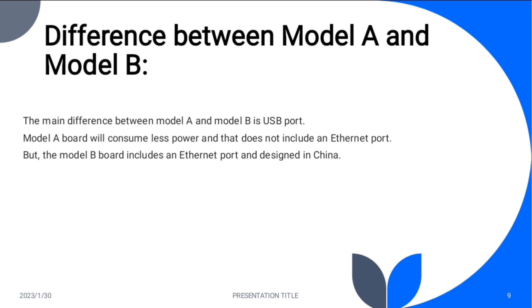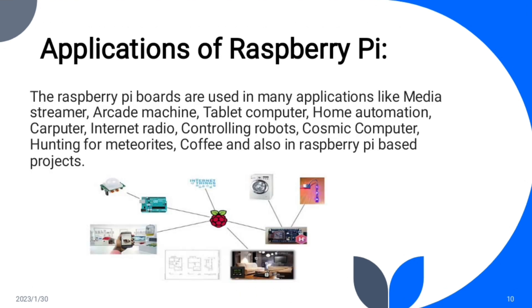Model A has a lower price and uses less power, whereas Model B has a higher price and uses more power. The Raspberry Pi boards are used in many applications such as media streamer, arcade machine, tablet computer, home automation, car computer, internet radio, controlling robots, cosmic computer, hunting for meteorites, stop motion camera, FM radio station, web servers, camcorder, zero phone, wireless printer server, and retro gaming machine.